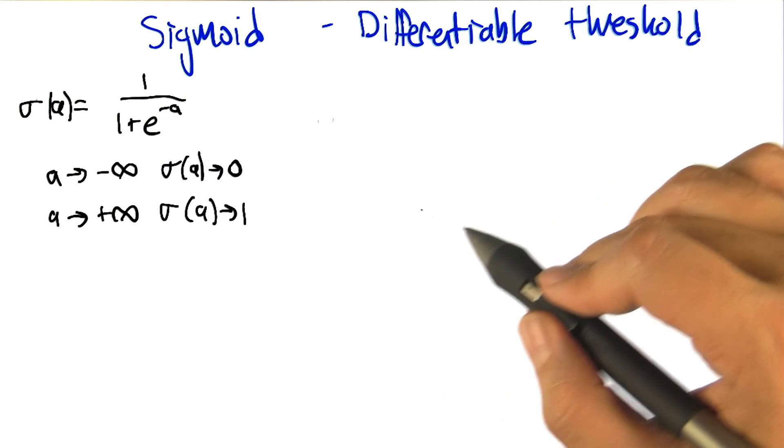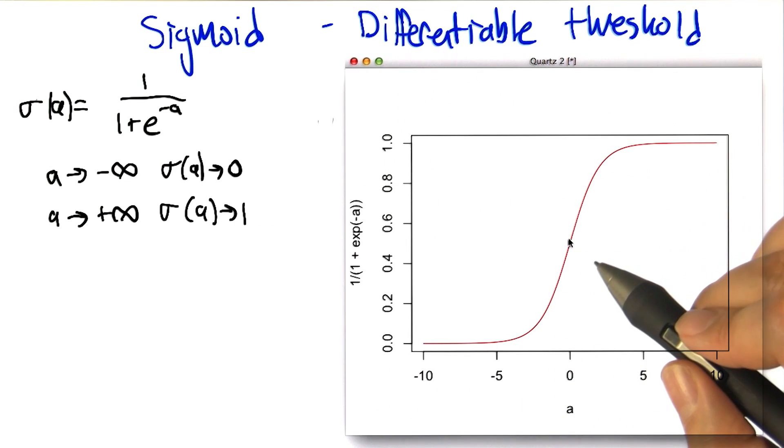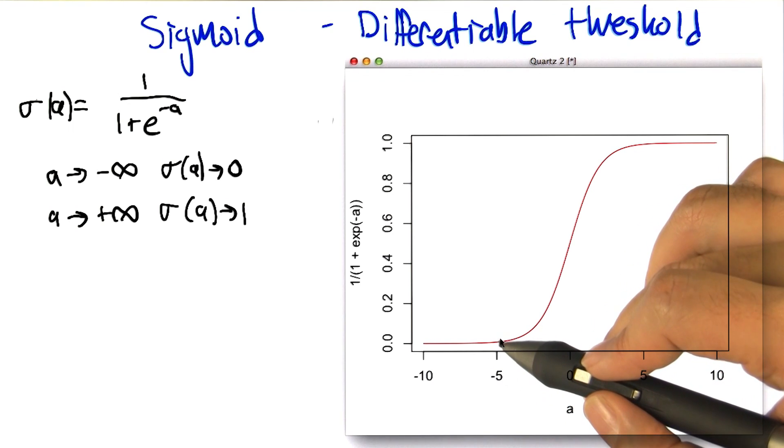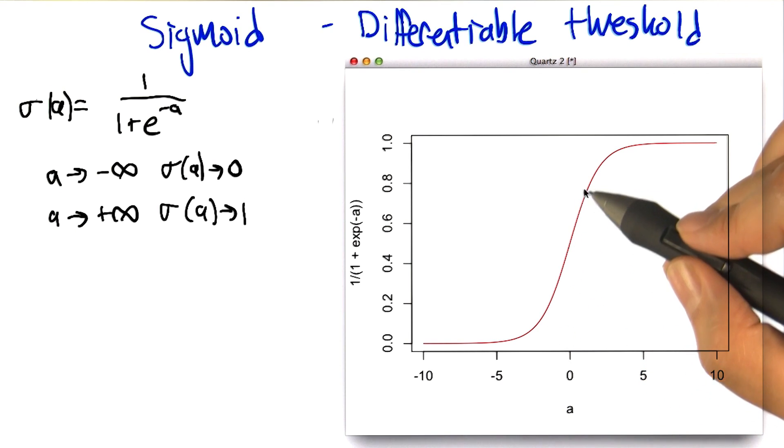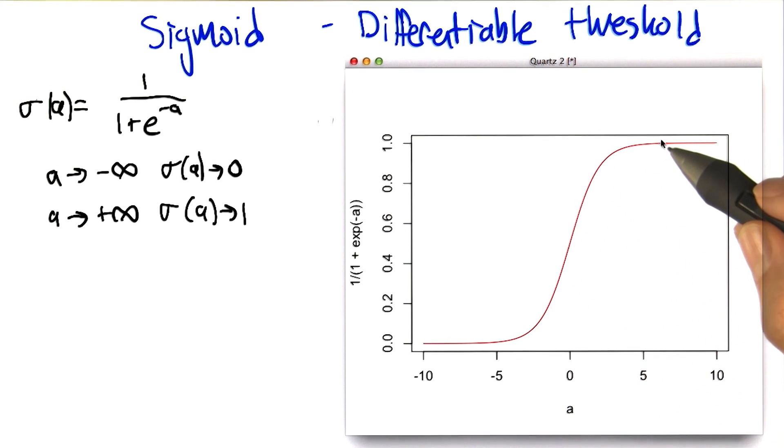And in fact, we can just draw this so you can see what it really looks like. You know, minus five and below, it's essentially at zero. And then it makes this kind of gradual, you can see why it's sigmoid, right? It's an S-shaped curve. Then it comes back up to the top and it's basically at one by the time we get to five.